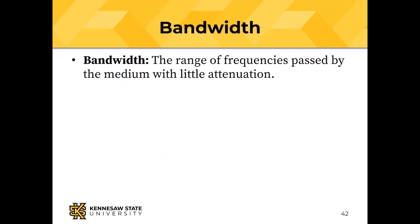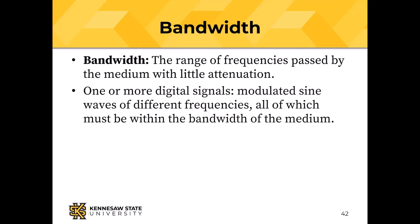Bandwidth is the range of frequencies passed by the medium — wire, radio, whatever — with minimal attenuation. Multiple digital signals at different frequencies, if within the bandwidth of the medium, can all be sent over the same transmission medium. Cable TV is an example: all channels are on the coaxial cable all the time, and the TV's tuner filters out just the one you want.